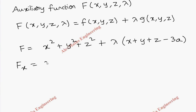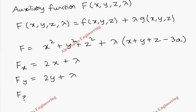Now we do partial differentiation. With respect to x this gives 2x + λ, with respect to y gives 2y + λ, and with respect to z gives 2z + λ. As per the working procedure, we equate all three of these to zero.